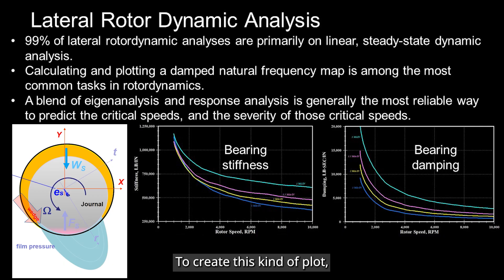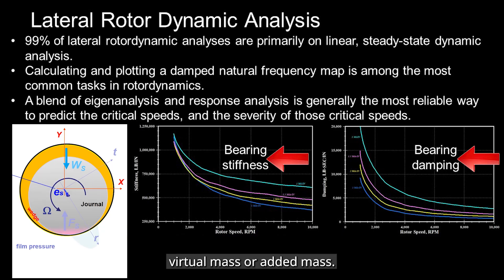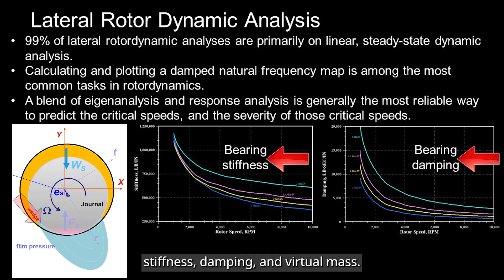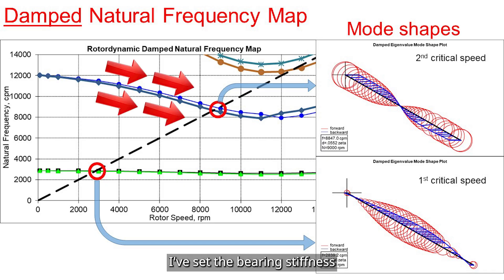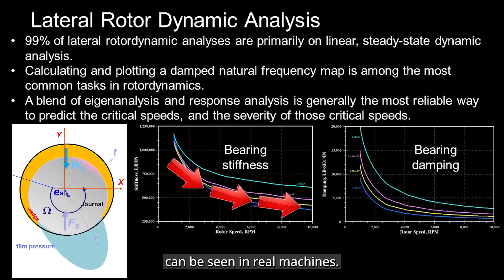To create this kind of plot, you'll need bearing stiffness, damping coefficients, and something called virtual mass or added mass. These values can be either supplied by the bearing manufacturer, and can also be measured directly using a test rig, or can be estimated through analysis tools that calculate stiffness, damping, and virtual mass.